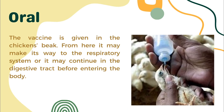In the oral method, the vaccine is given in the chicken's beak. From here, it may make its way into the respiratory system, or it may continue through the digestive tract before entering the body.